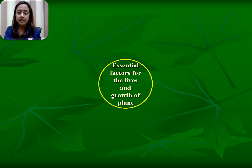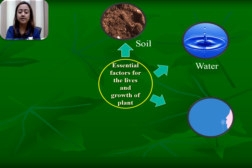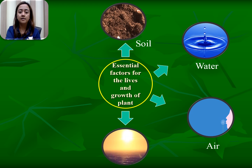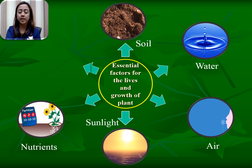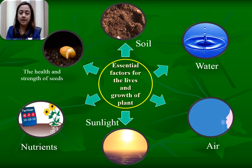So what are the essential factors for the lives and growth of plants? First, we have soil, next is water, air, sunlight, nutrients, and the health and strength of seeds. As you may remember from previous lessons, living things need food, water, and air. So in the case of plants or seeds, they need water, air, and also food — which is the fertilizer.